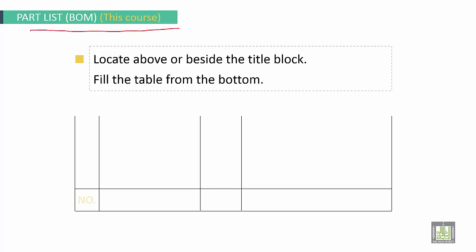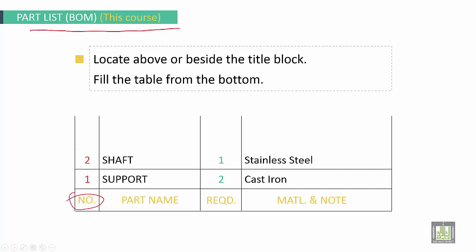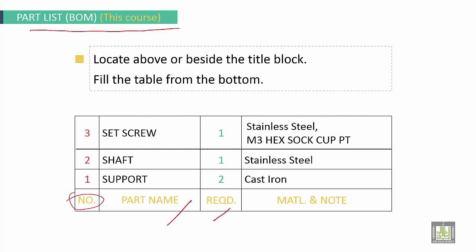Use this template. Here we have number one, two, three, four, the reference number of parts. Part name. Required number. And material or notes. For example, supports, we have it is number one reference number one on the graph. And here we use two parts as a support. The material is cast iron. Reference number two, it is shaft but we use only one as a quantity. Material it is stainless steel. Reference number three, it is set screw, number and the quantity it is one. And material it is stainless steel.